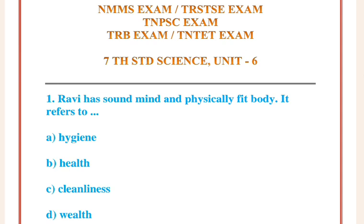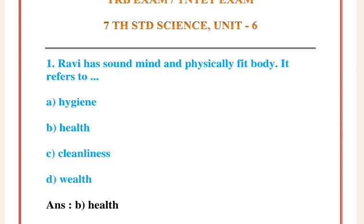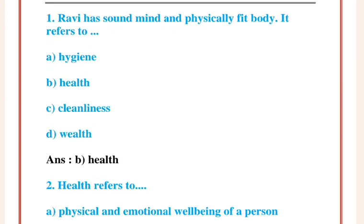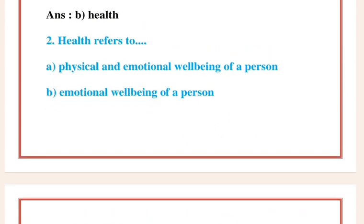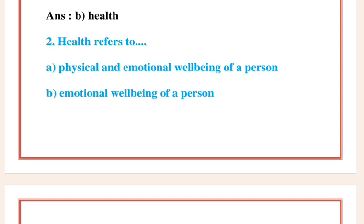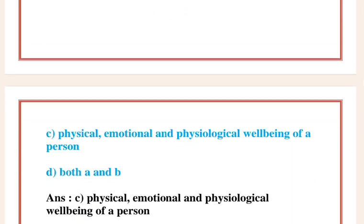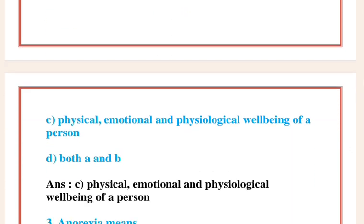Question 1: Ravi has a sound mind and a physically fit body. It refers to Answer B: Health. Question 2: Health refers to Answer C: Physical, emotional and physiological well-being of a person.